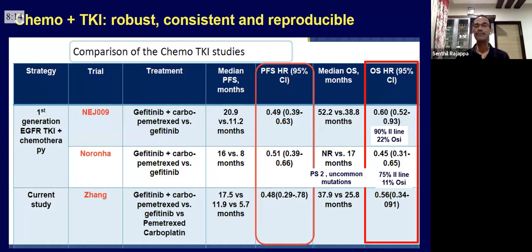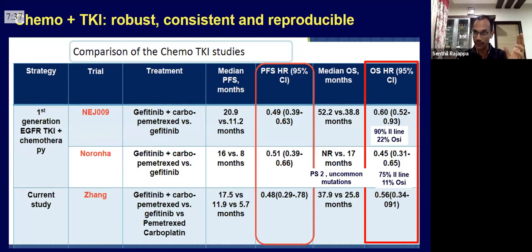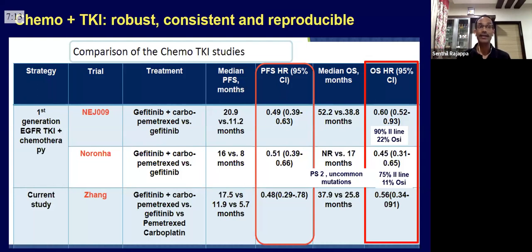None of the studies so far have shown such a favorable survival benefit as the Japanese data. The Japanese patient population is harder to lose even with cancer. Notably, 90 percent of Japanese patients actually got onto second-line therapy — Tata Hospital was not far behind at 75 percent. However, going back to the key point: only about 20 percent in the Japanese study and 11 percent in the Indian study actually got osimertinib in the second line. Not everyone reaches optimal second-line therapy.